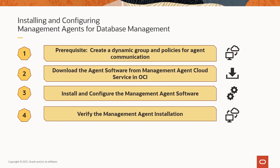Let's get started with the steps to install and configure management agents. We will divide this into four different steps: a prerequisite step to create a dynamic group and policies for agent communication; downloading the agent software from the management agent cloud service in OCI; installing and configuring the management agent software; and finally, verifying the management agent installation.